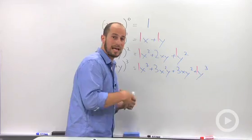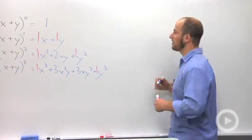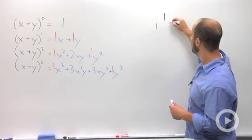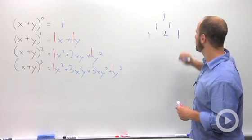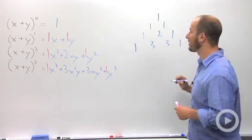So I'm going to write these coefficients out in a triangle form. Coming over here, what we end up having is 1 from the first, 1, 1 for the second, 1, 2, 1 for the third, and 1, 3, 3, 1 for the fourth.